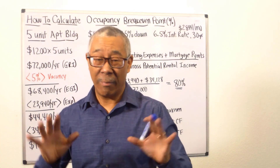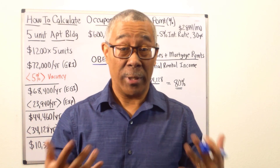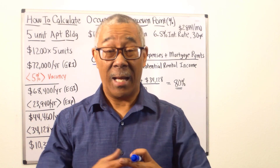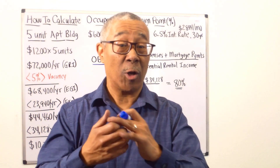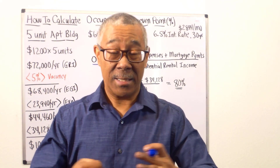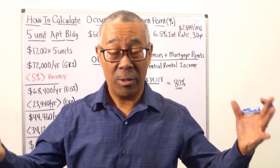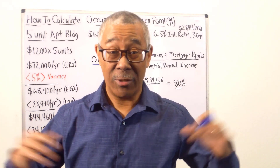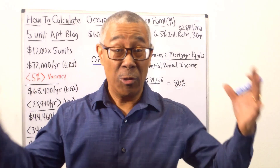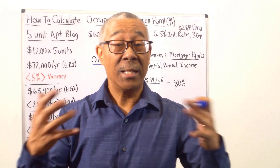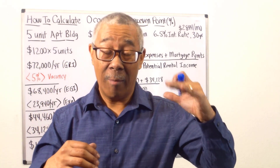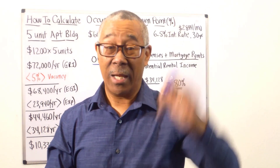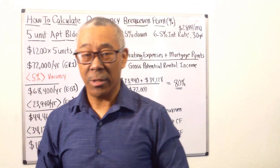Now here's the equation, but before I go there, the reason why you want to know this is especially in cases where you have a lot of vacancy and you're fixing up your apartment building. Let's say it's a hundred unit apartment building and only 40 are occupied, so you have 60 to renovate. In huge projects like this, you need to know at what point — how many tenants do I need to move in — where I'm starting to break even and cash flow. That's why it's important to know.